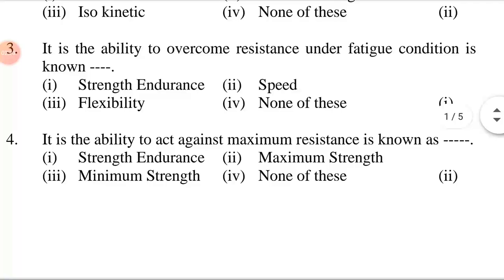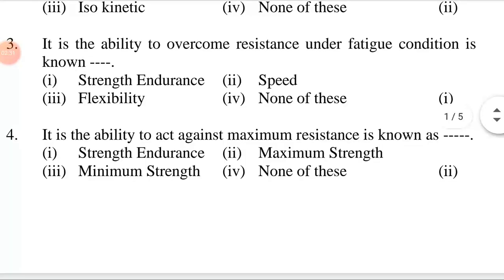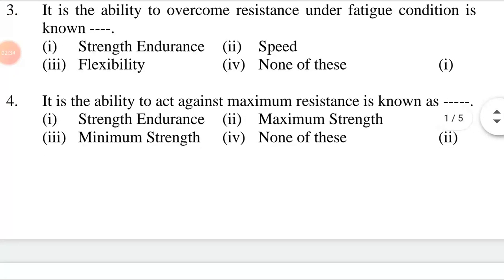The ability to overcome resistance under fatigue condition is known as dash. First option: strength endurance. Second option: speed. Third option: flexibility. Fourth option: none of these. The answer is the first option — strength endurance. The ability to overcome resistance under fatigue condition is known as strength endurance.